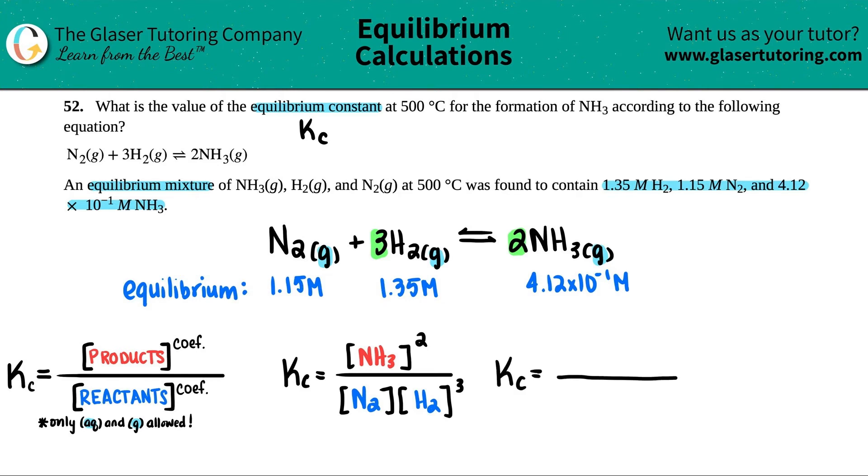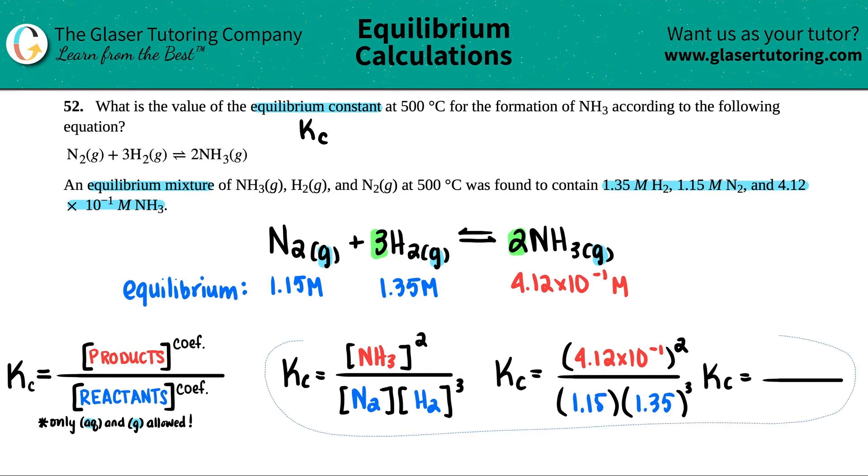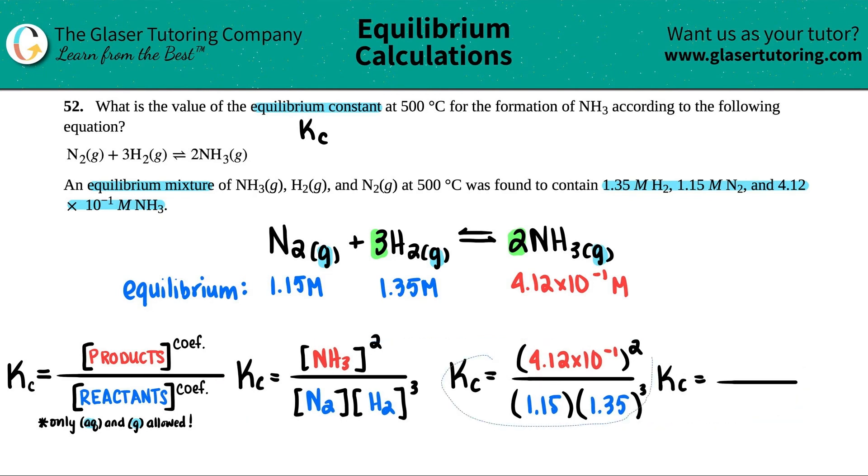KC equals, let's see, we got the 4.12. I should have made this red. I'm just, I just like to look at it. So I'm just going to say 4.12 times 10 to the negative 1, molarity, and then I'll just put 4.12 times 10 to the negative 1. I won't put the units because I know that they're the correct units. Only molarity is allowed to be in here when you're doing KC. And then I got, let's see, 1.15. Close that up. And then I got 1.35. And that's going to be raised to the 3rd.